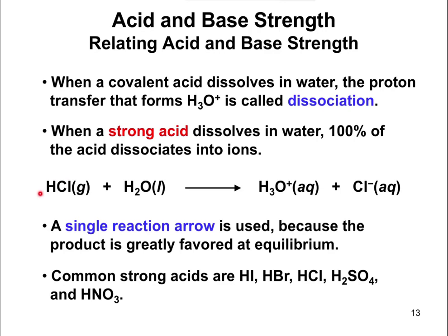If you look at this equation: HCl plus H2O forms the hydronium ion and the chloride ion. In order for that proton to be transferred, the proton has to dissociate from the HCl. In what we call a strong acid, 100% of the acid dissociates into ions. So when you take a strong acid like HCl, 100% of the HCl molecules you put in water are going to separate into H+ and Cl-. The H+ goes over to H2O to form the hydronium ion, and then you have the chloride ion left alone.